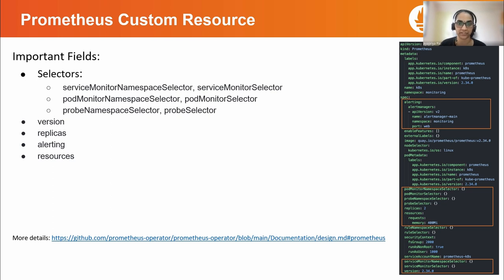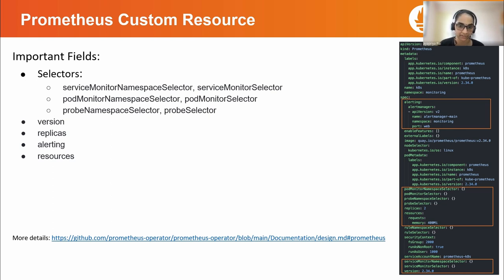The Prometheus custom resource definition declaratively defines a desired Prometheus setup to run in a Kubernetes cluster. It provides options to configure replication, persistent storage, retention, and alert managers to which the deployed Prometheus instances send alerts. For each Prometheus resource, the operator deploys a properly configured stateful set in the same namespace. You can specify which service monitor, pod monitor, or probe should be covered by the deployed Prometheus instance based on label selection. The operator will generate a configuration based on the included service monitors and other configuration objects and updates the secret containing that configuration, continuously doing so for all changes made to these objects and the Prometheus resource itself.